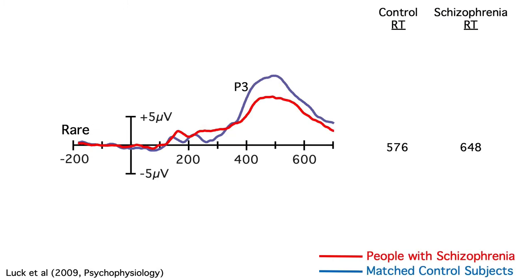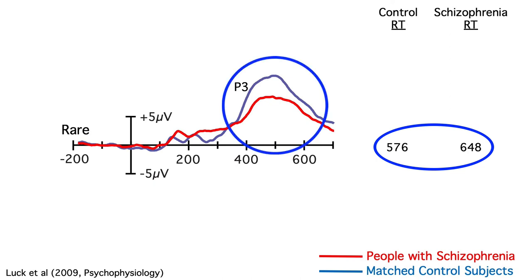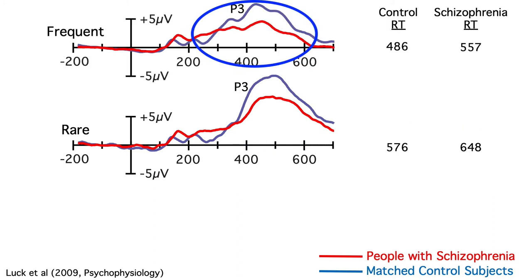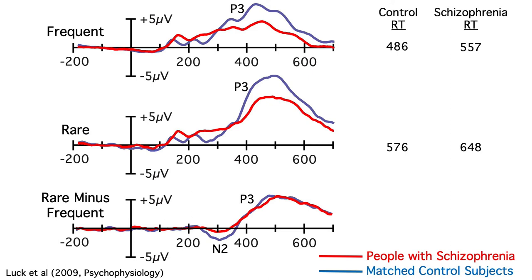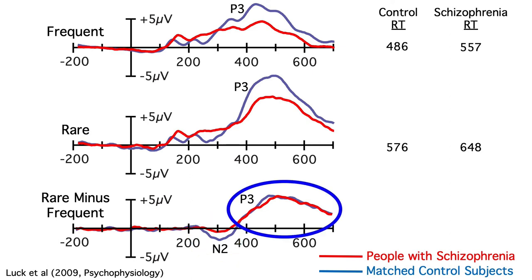As I showed you before, the amplitude for the oddballs during the P3 latency range was smaller in people with schizophrenia than in control subjects. Response times were delayed by about 70 milliseconds in the schizophrenia group, but there was no obvious difference in P3 latency. There was also a difference in amplitude during the P3 latency range for the frequent category, and a 70 millisecond slowing of RTs in the schizophrenia group. The reduced amplitude in the schizophrenia group was present for the frequent category as well as for the rare category — it wasn't just for the oddballs. And if we look at the rare-frequent difference waves, we see almost identical P3s in the two groups. The control subjects show an N2 that's largely missing in the schizophrenia group, but there was absolutely no group difference in the P3 wave.